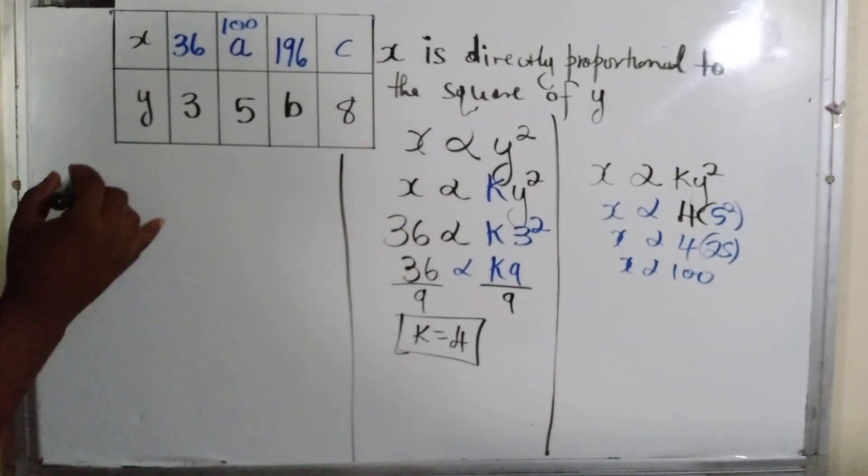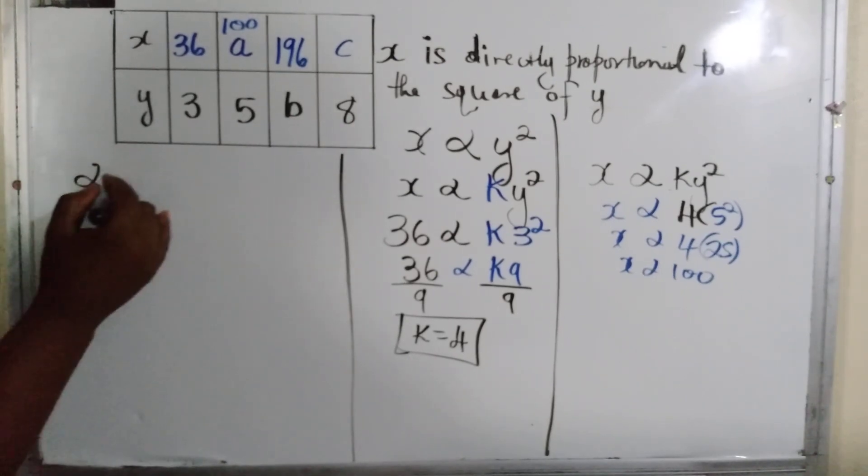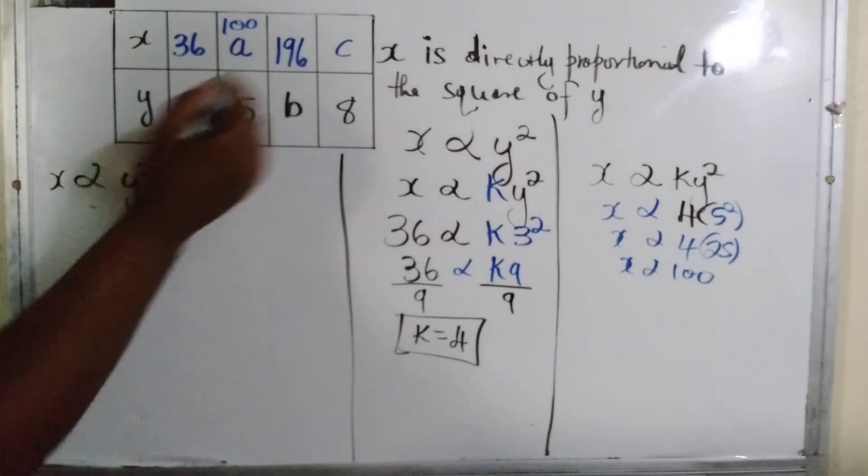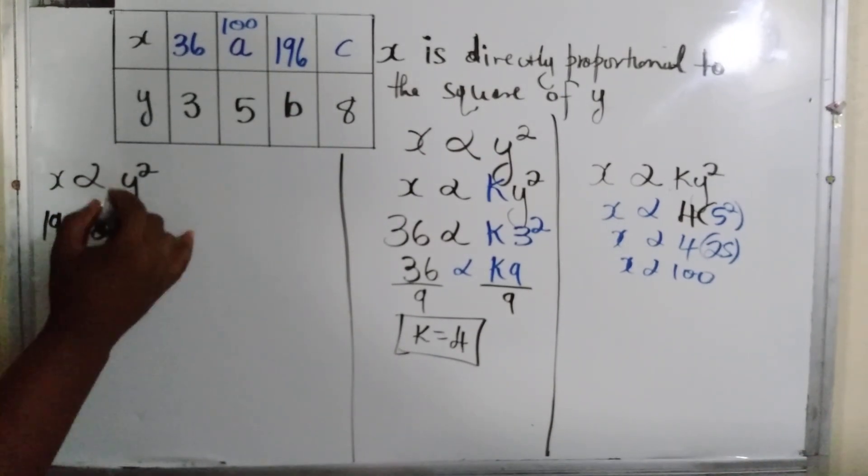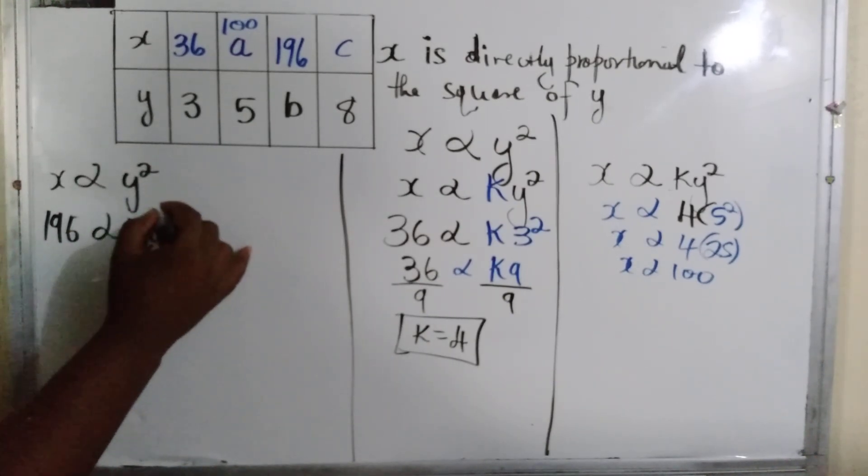Let's write it back: x is proportional to y squared. We know the value of x to be 196, we know the constant k is 4, and then we have y squared.